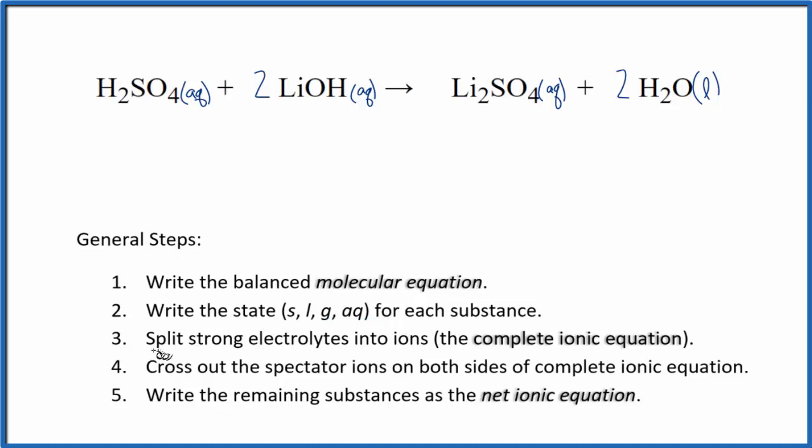Once we do that, we can split these strong electrolytes into their ions. And that'll give us the complete ionic equation. So let's split them up. We know that hydrogen is in group 1 on the periodic table. It has a 1 plus charge. And if we look the sulfate up, that has a 2 minus ionic charge. Something good to remember. Lithium in group 1 also, plus charge. And then the hydroxide, OH, that's the hydroxide ion. It has a negative charge.